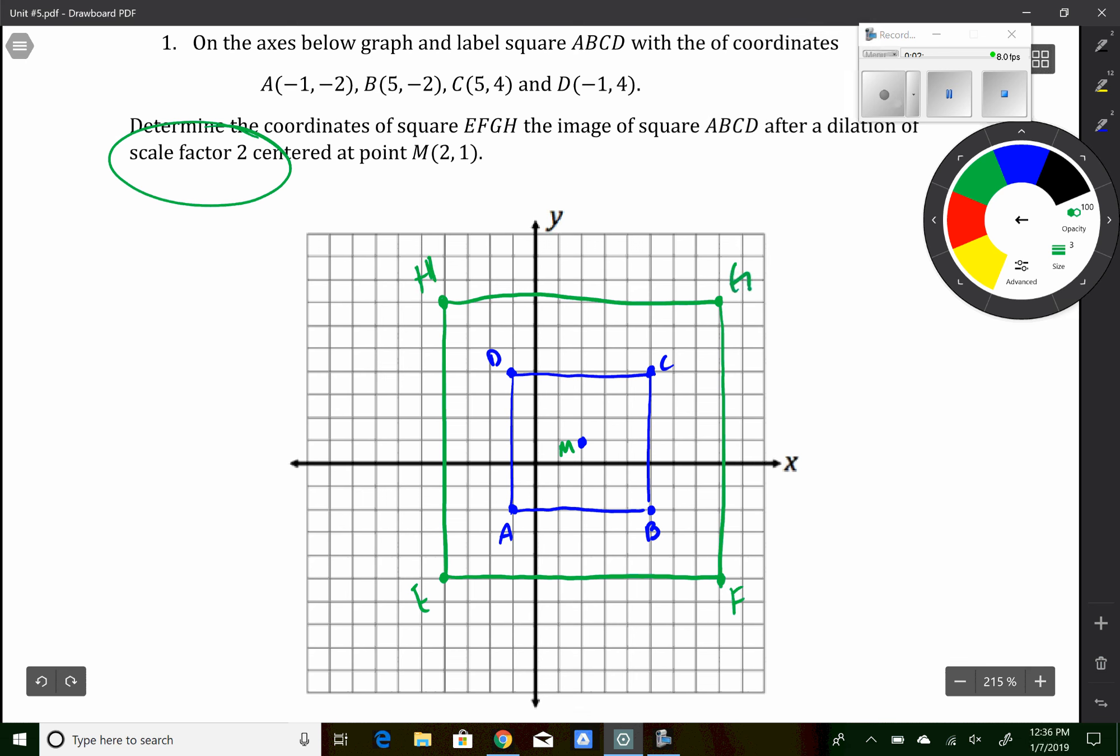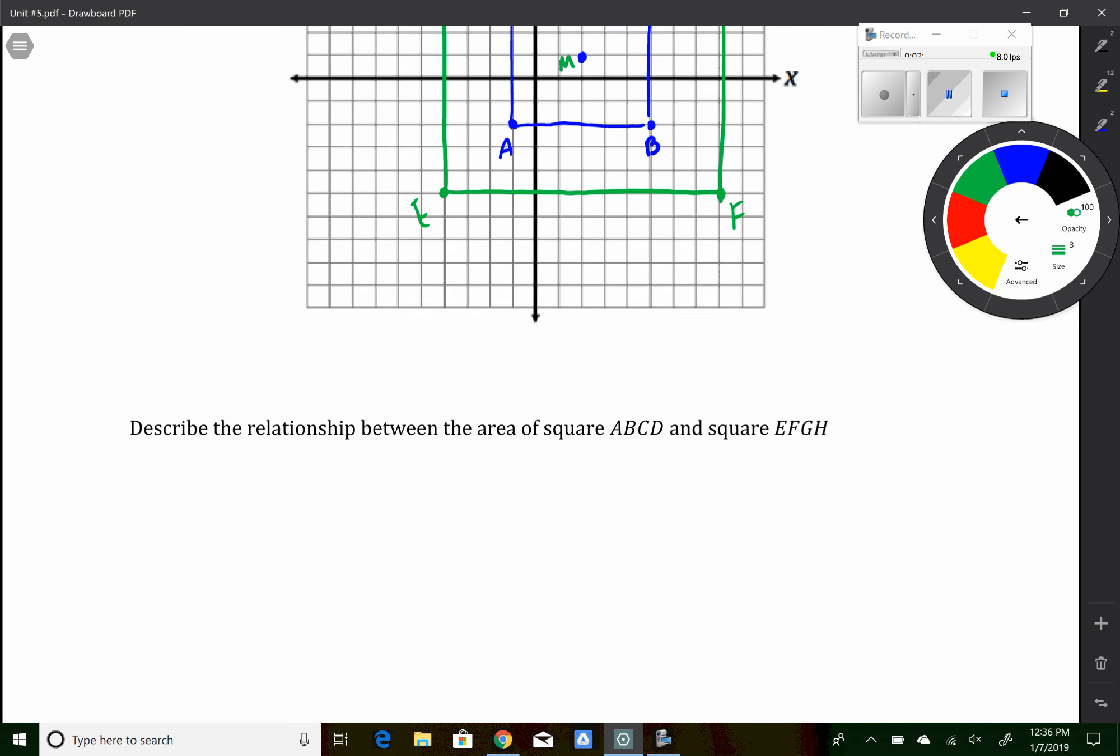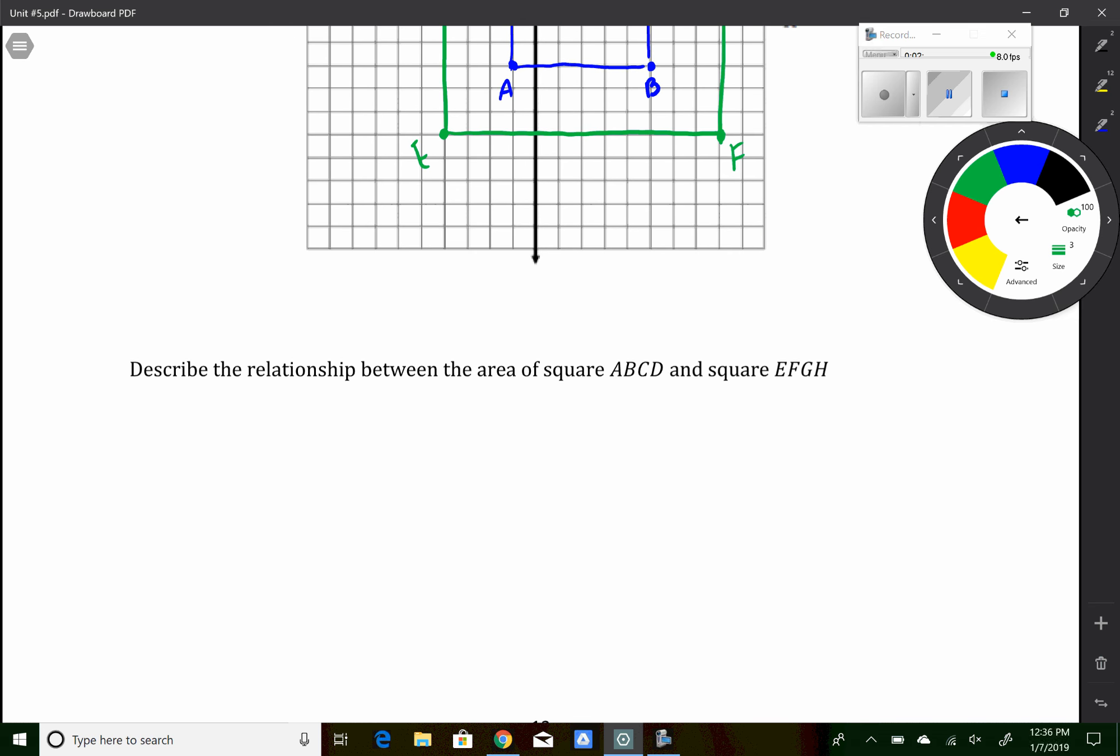So the relationship here is since it's a scale factor of 2 for the sides, the scale factor of the area is going to be 4. So I could say the ratio of area ABCD to EFGH is